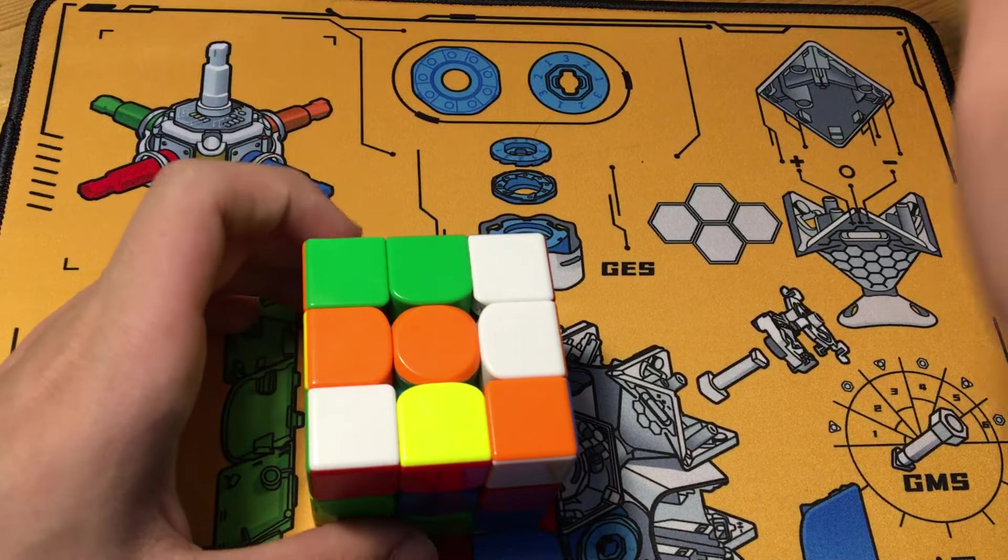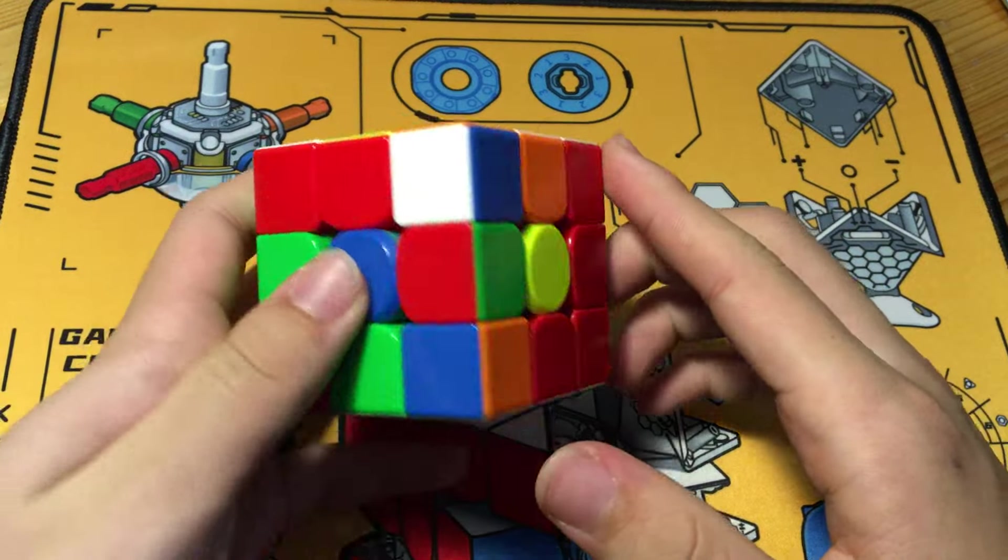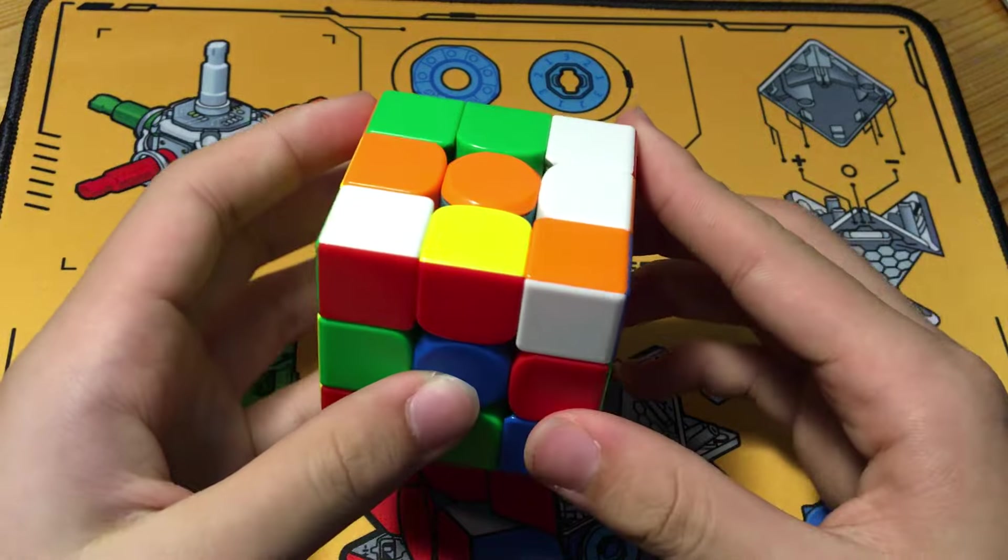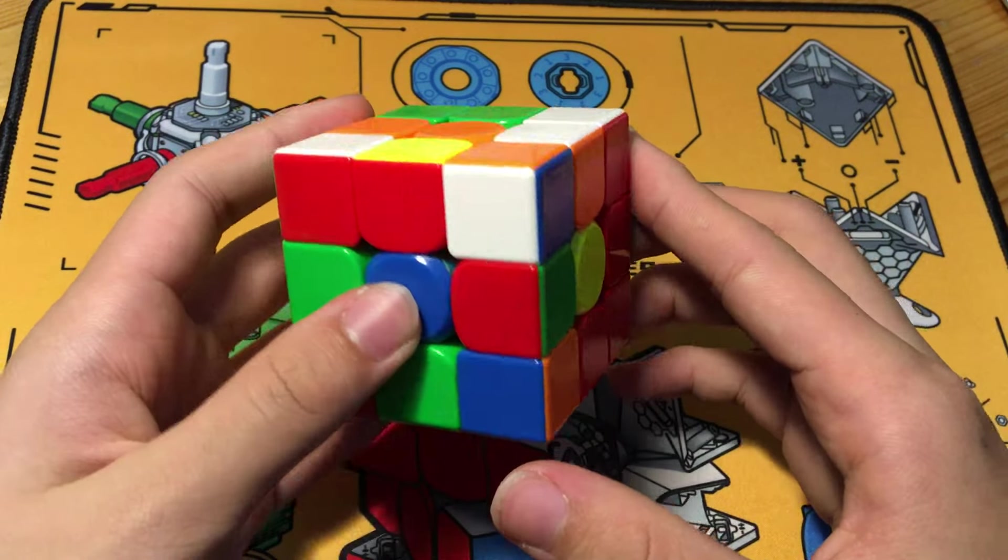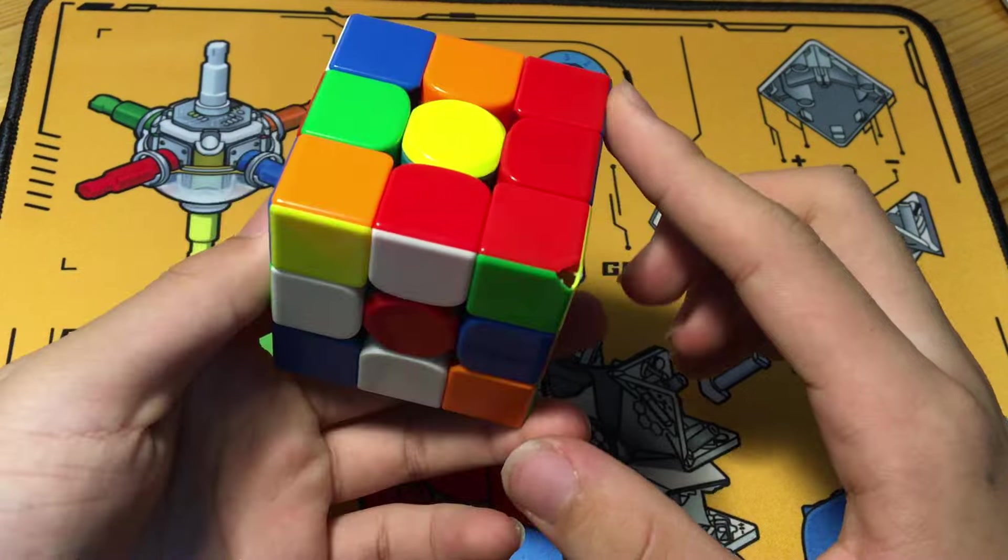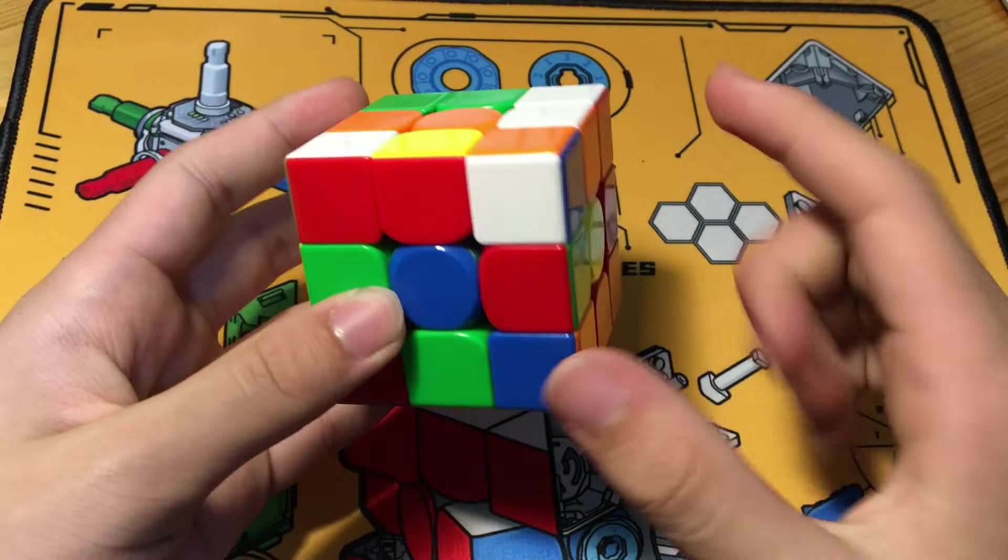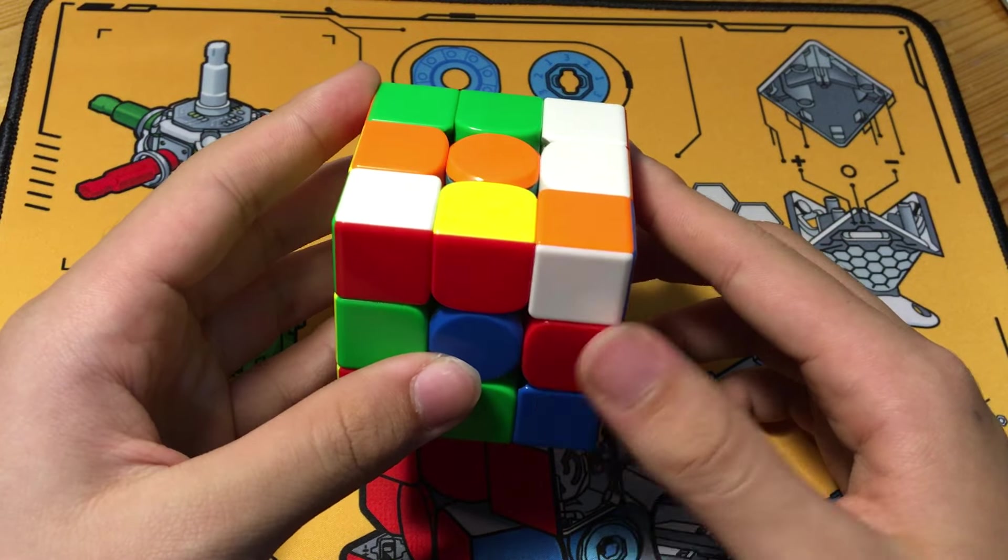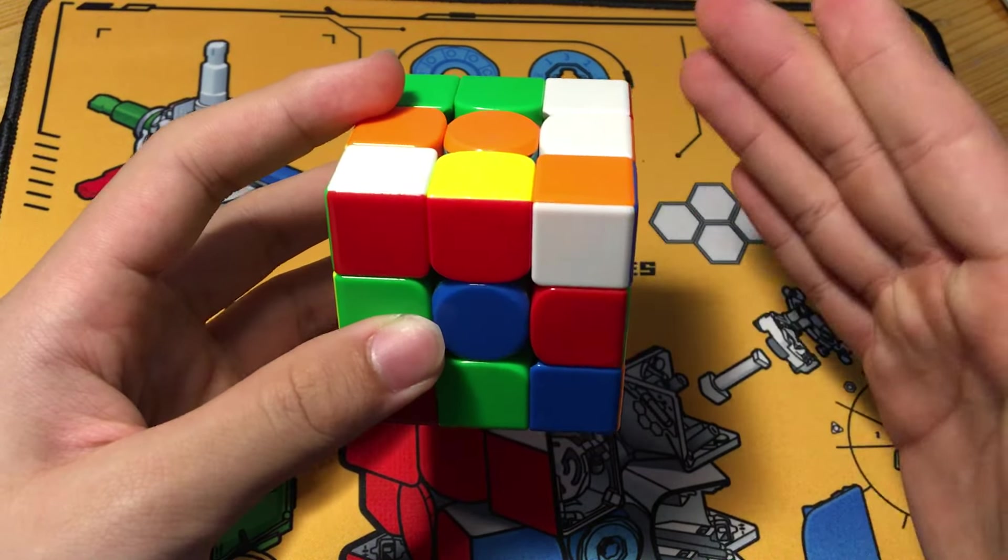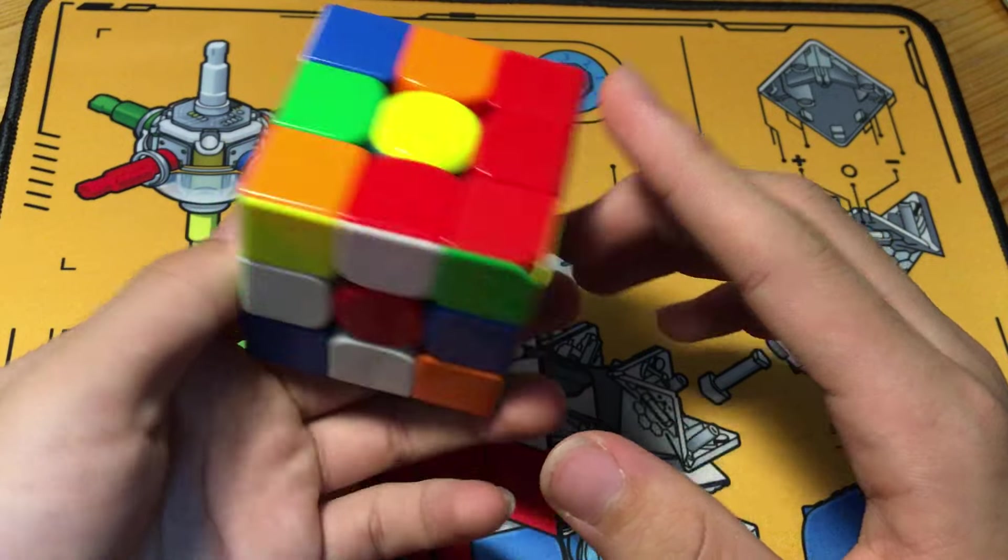But the second solve is one to amaze and astonish, the 3.92 full-step single of this average, brilliant solve by Timon. His cross pieces are on red, here, here, here, and here. He is going to build an X-cross and also set up a second pair to be a free pair during that cross.